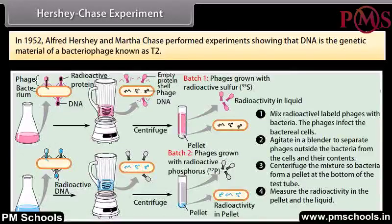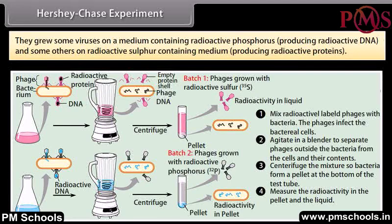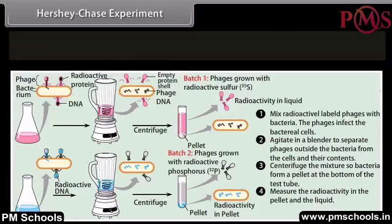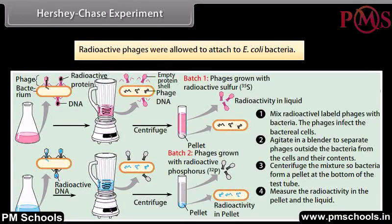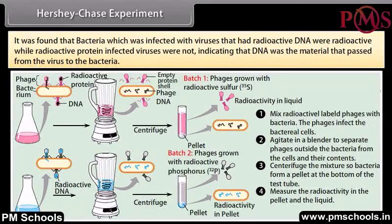Hershey-Chase Experiment. In 1952, Alfred Hershey and Martha Chase performed experiments showing that DNA is the genetic material of a bacteriophage known as T2. They grew some viruses on a medium containing radioactive phosphorus, producing radioactive DNA, and others on a radioactive sulfur-containing medium, producing radioactive proteins. Radioactive phages were allowed to attach to E. coli bacteria. It was found that bacteria infected with viruses that had radioactive DNA were radioactive, while those infected with radioactive protein viruses were not, indicating that DNA was the material that passed from the virus to the bacteria.